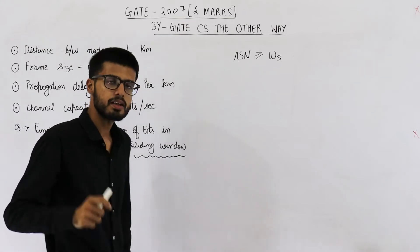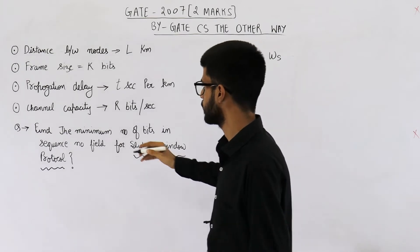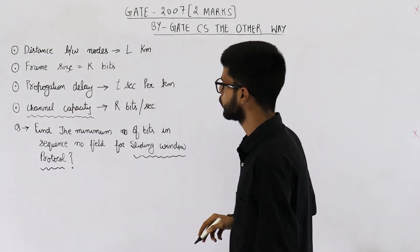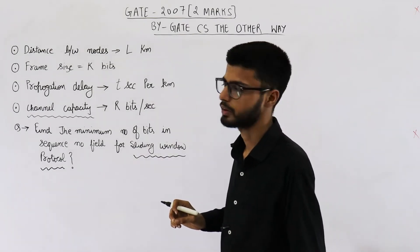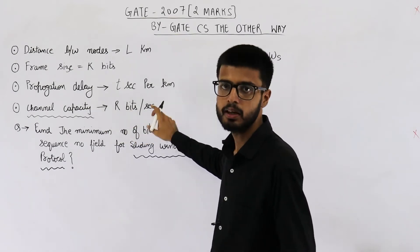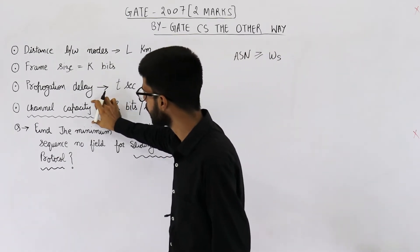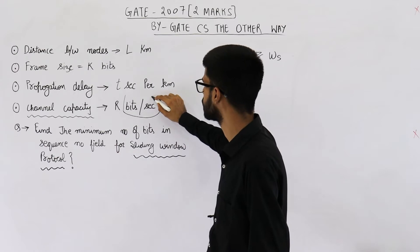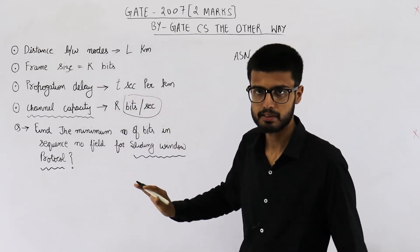Now there's one more point that I like to discuss before starting this question. That is this word channel capacity. So most of the students get confused. Actually, there's a small mistake in question. They are saying channel capacity is R bits per second. But they wanted to say bandwidth is R bits per second. Because channel capacity cannot be in bits per second. Channel capacity will have unit bits. That's it. Only bits.